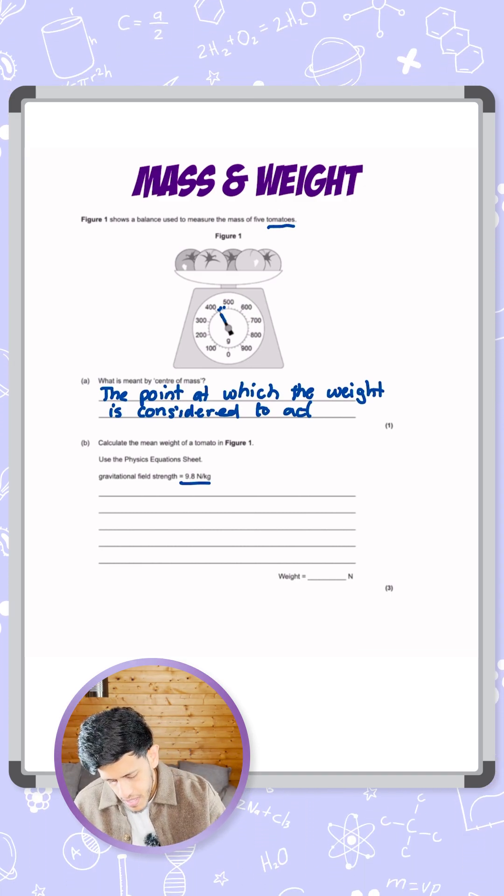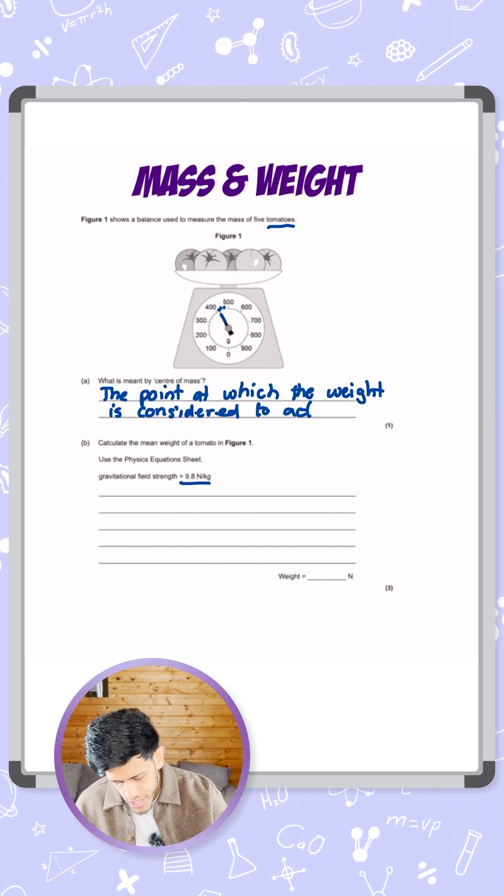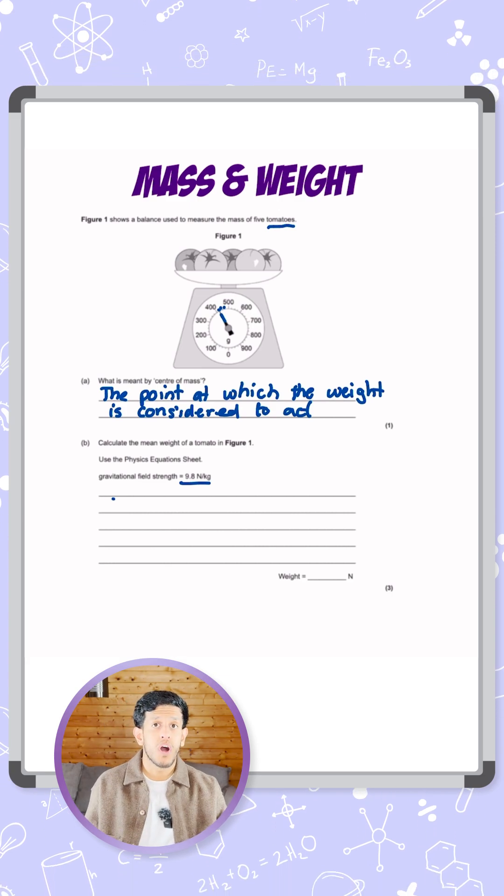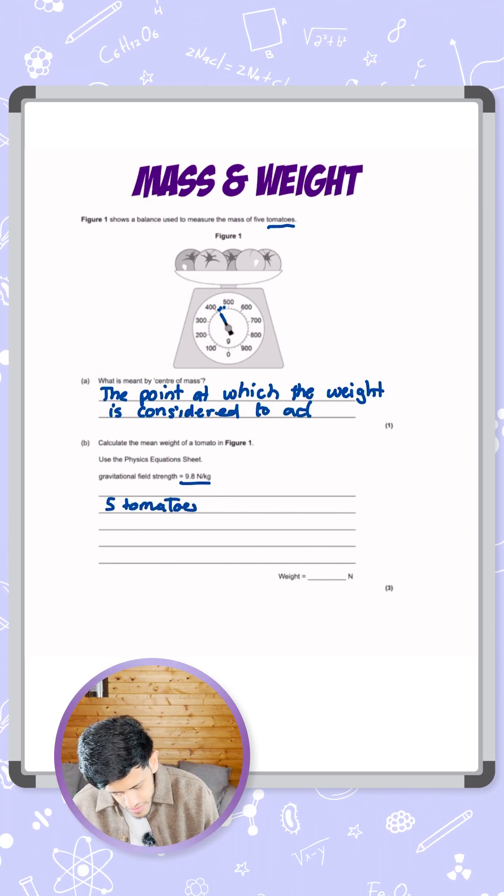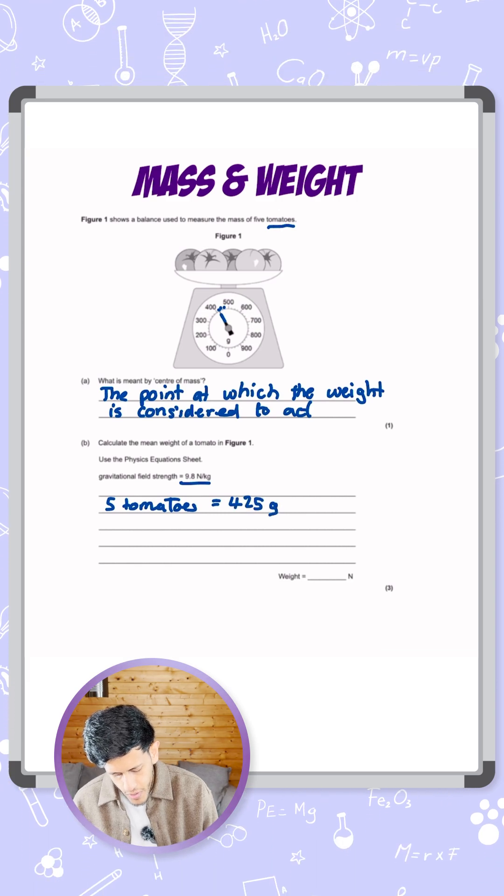Looking at this one in particular, it's on the first division, so one division past 400. That would be 400 plus 25, so five tomatoes has a mass of 425 grams.